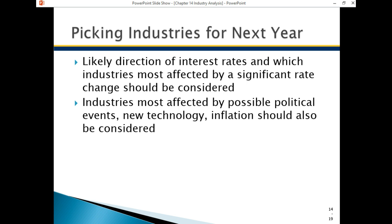We also have to worry about the direction of interest rates, which will significantly affect many industries and companies — especially banking. You have to be aware of how sensitive your industry is to interest rates. If it's an industry involving housing, they're very sensitive. If interest rates go up — which they're likely to do next year — home sales should slow, and this will affect those industries.